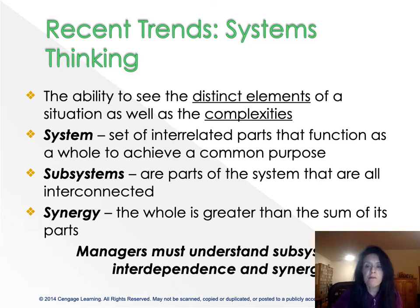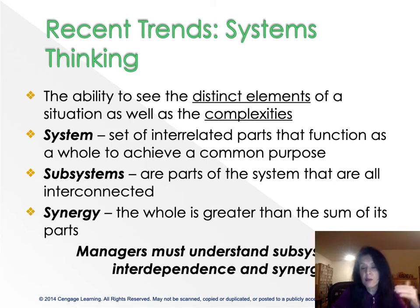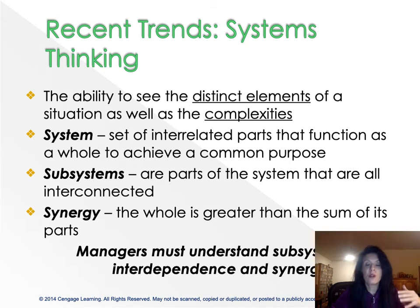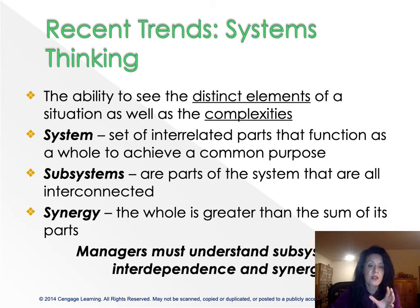A system must be looked at as a whole — a set of interrelated parts that function as a whole to achieve a common purpose. A company is a system with interrelated parts. Each department has its own individuality, goals, objectives, rules, and regulations. For example, the management department is independent of the accounting department, and accounting is independent of the sales department, but each department has parts that are related to one another to achieve a common purpose.